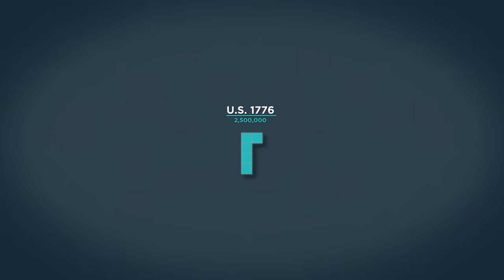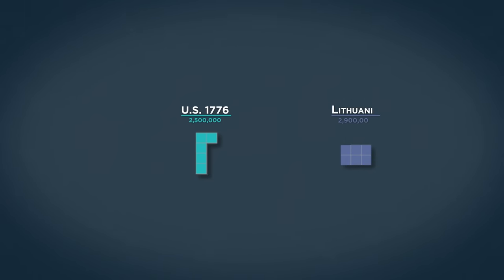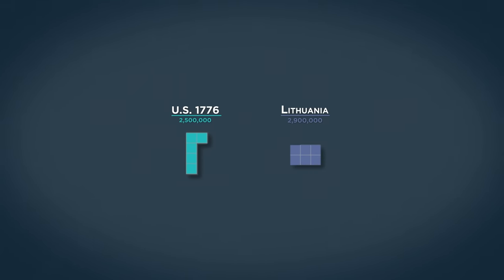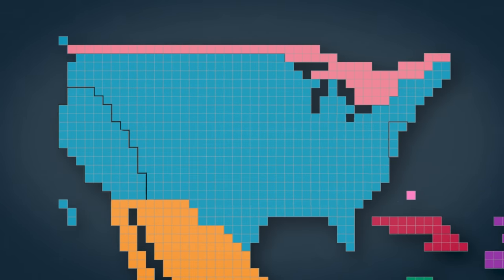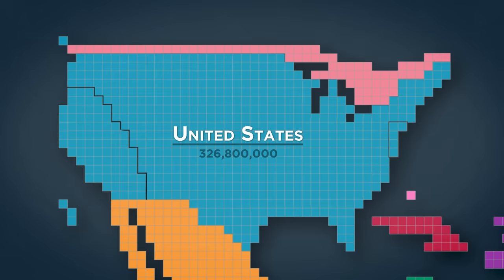When the United States was declared independent in 1776, her population was only about five of these squares, or 2.5 million people, roughly equivalent to the modern-day population of Lithuania. But in the centuries since then, the United States population has exploded to become the third largest in the entire world at 326.8 million. More than 1 in 10 Americans live in California, America's most populous state, which has 16 times the population that the entire United States had in 1776.